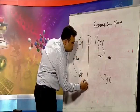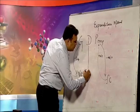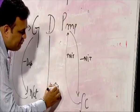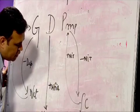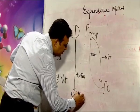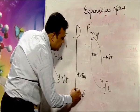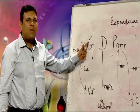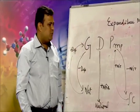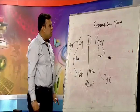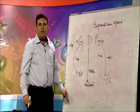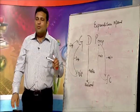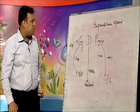NDP at FC is domestic income. If I want to make this domestic into national, I just add NFIA and it becomes national income. This is one thing you have to keep in mind while dealing with the expenditure method.